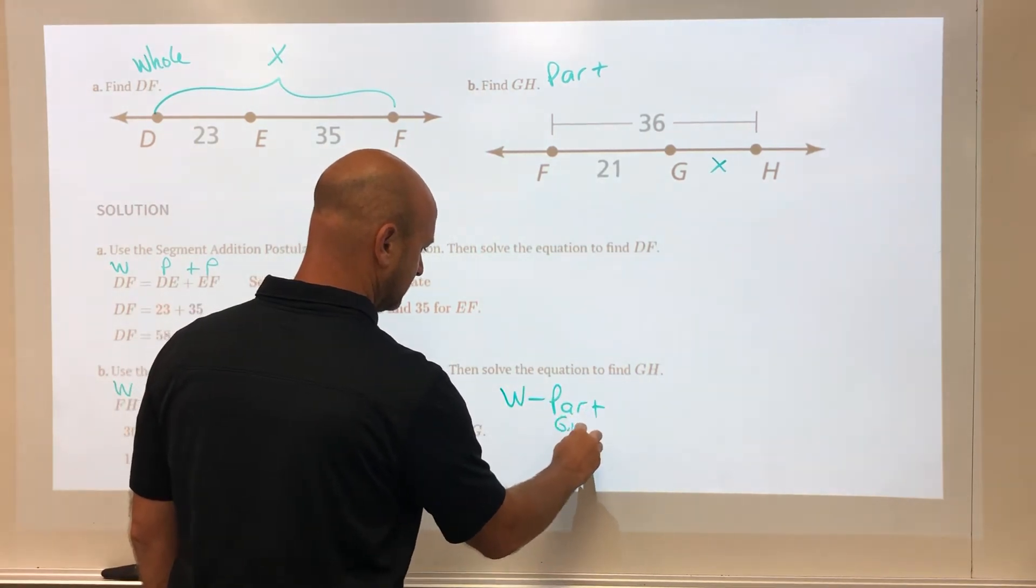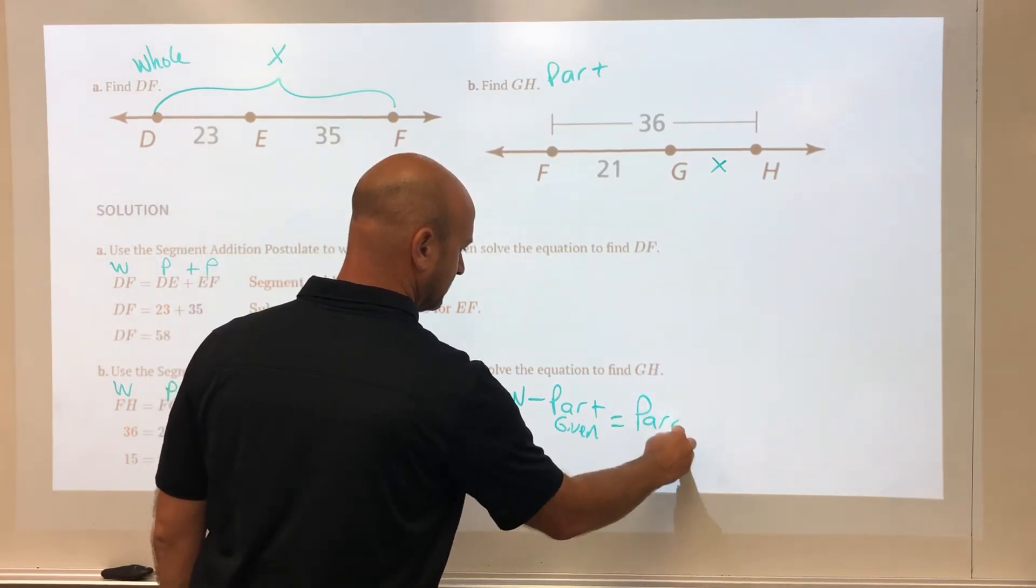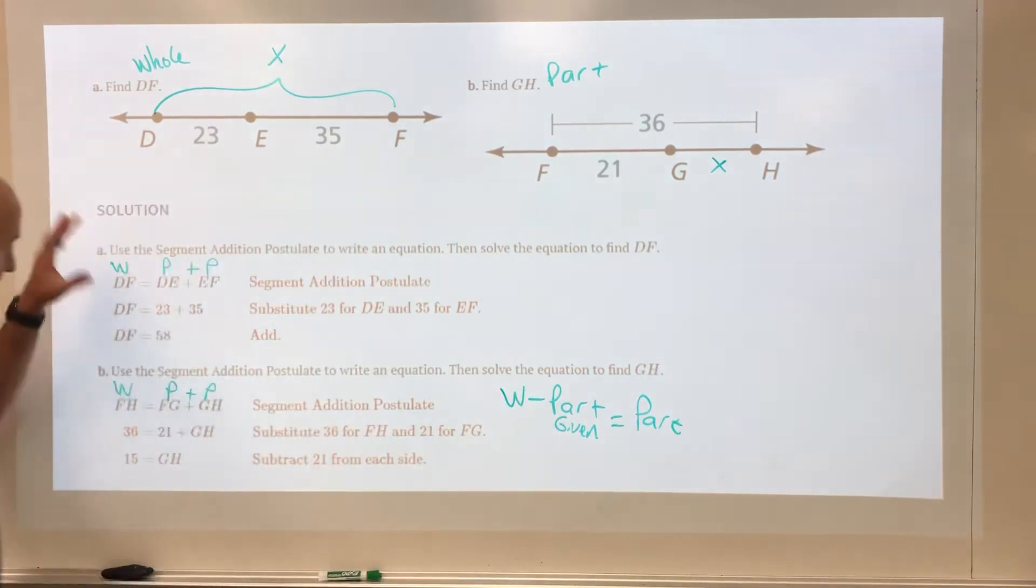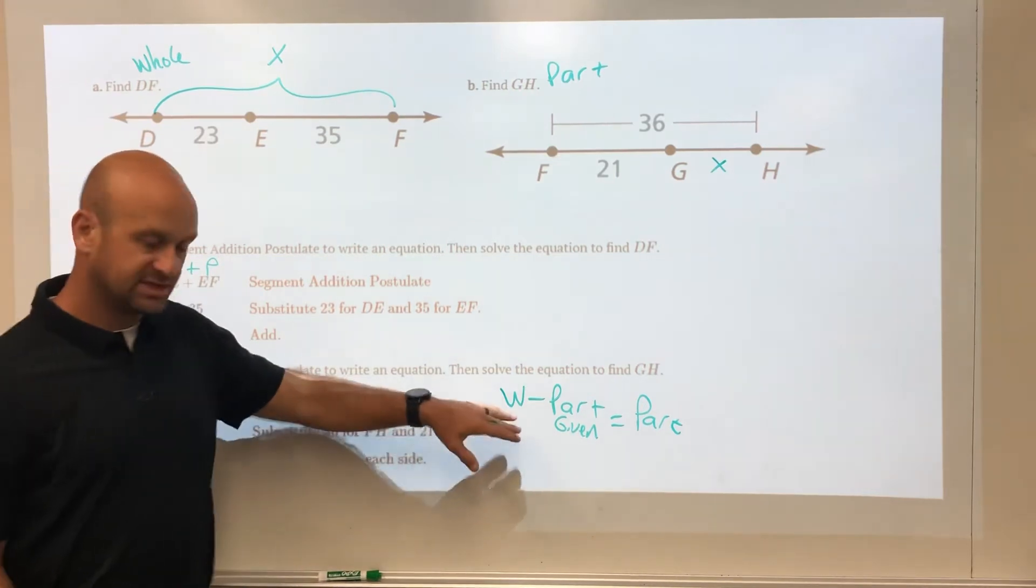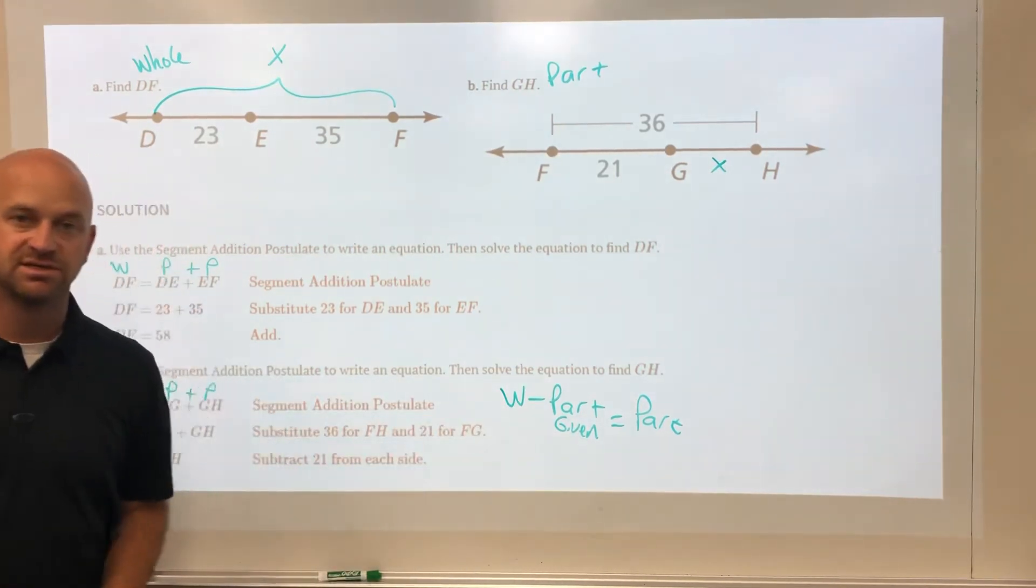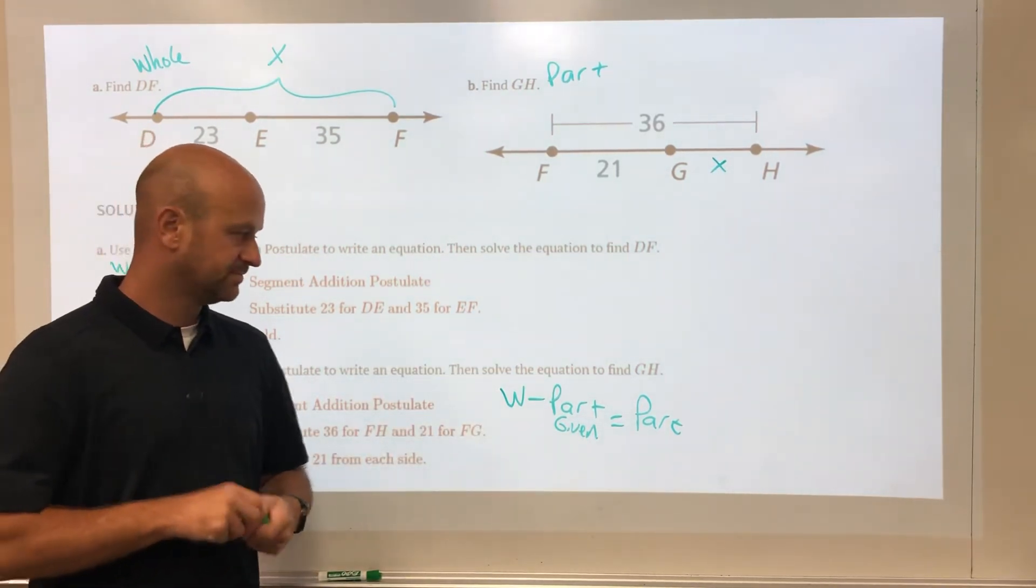It's the whole minus the part given, and that will give you the missing part. So that's it: we either add them up to get the whole, or we take the whole thing and subtract the part that we're given.